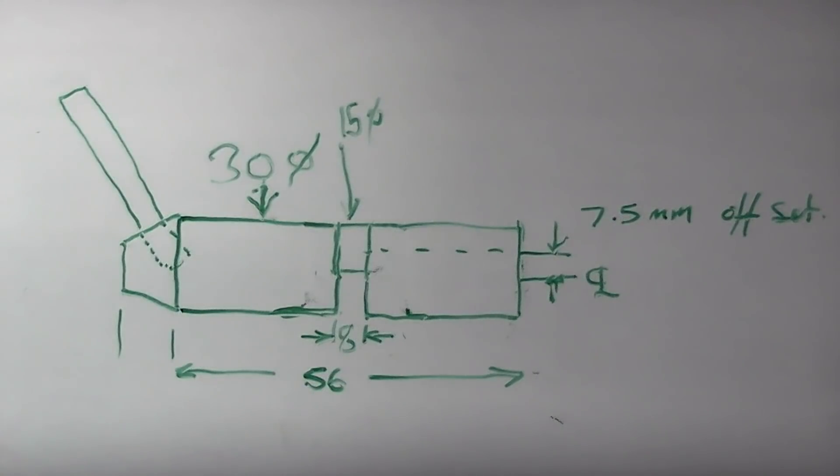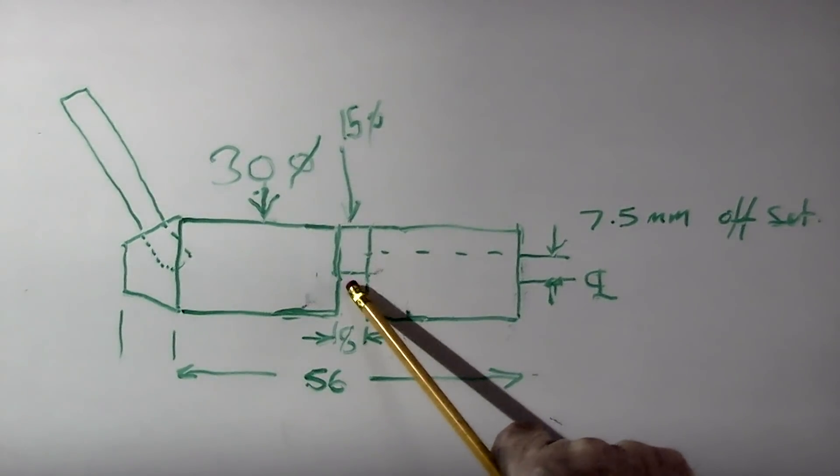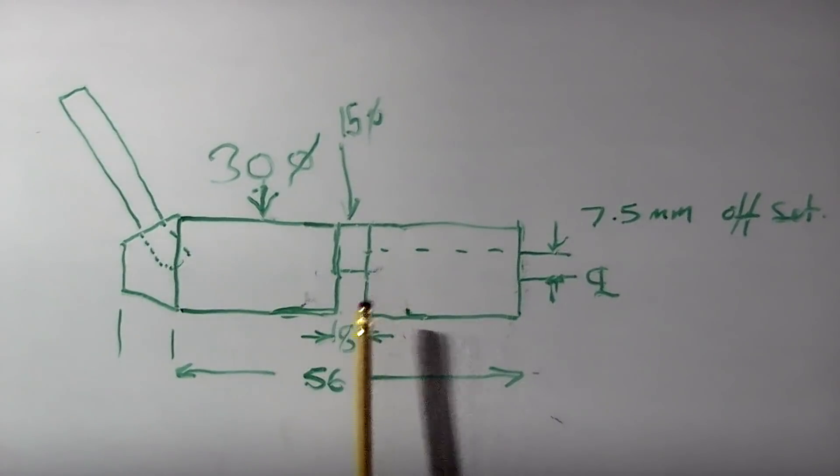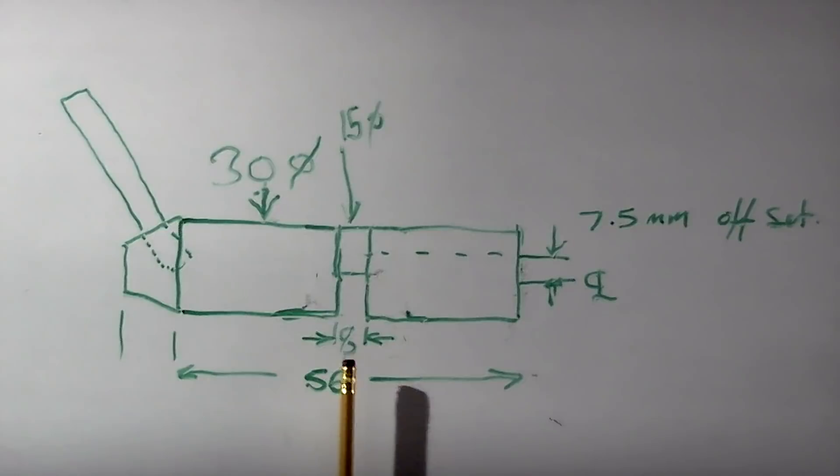This is today's project. What I want to do is machine an offset in the center of this bar so that when I turn the handle, the outside rotates and the offset pushes a pin in and out.